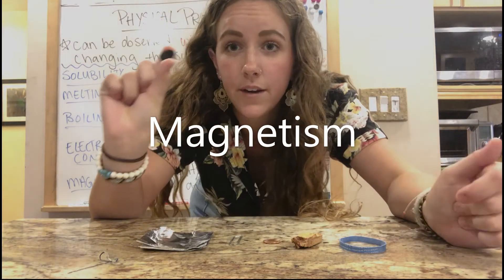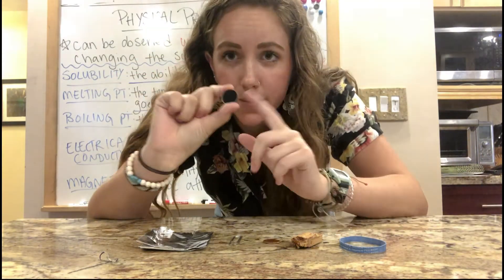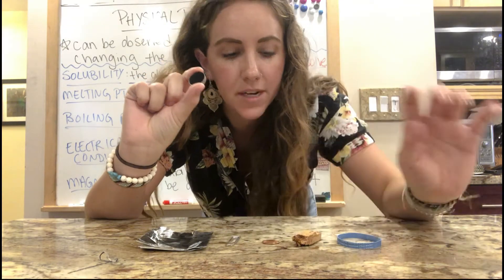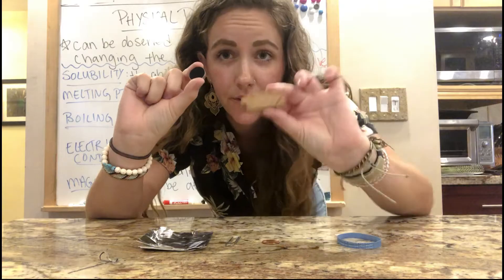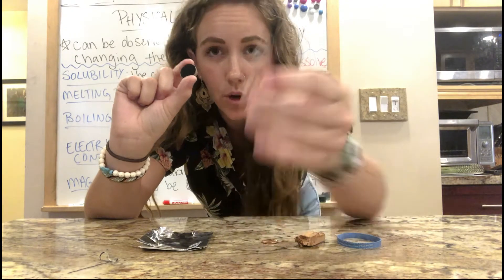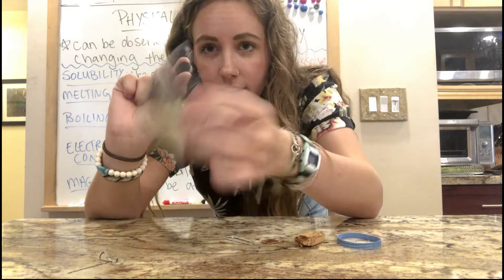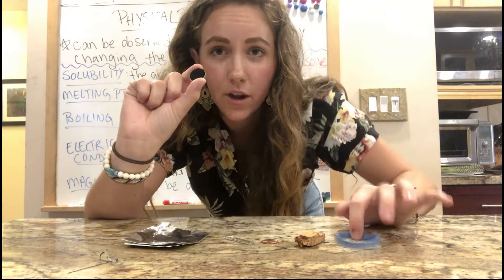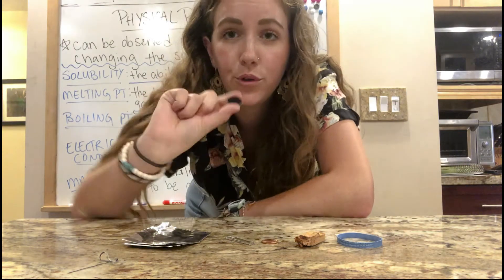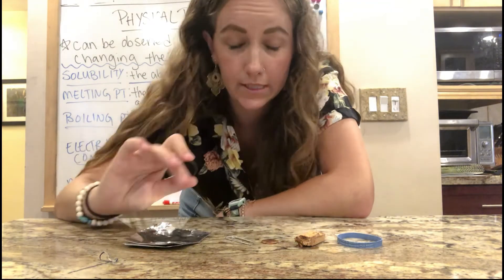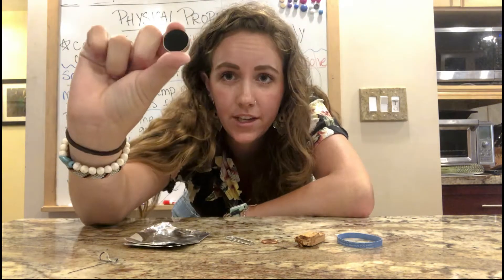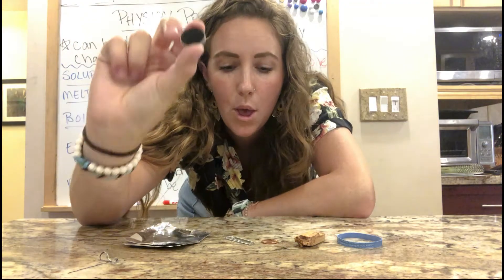Here is my fridge magnet, and I am going to test it on five different random objects: our piece of wood, our penny, our paper clip, our aluminum foil, and a rubber band. We will know that an object is magnetic if it sticks to my magnet.